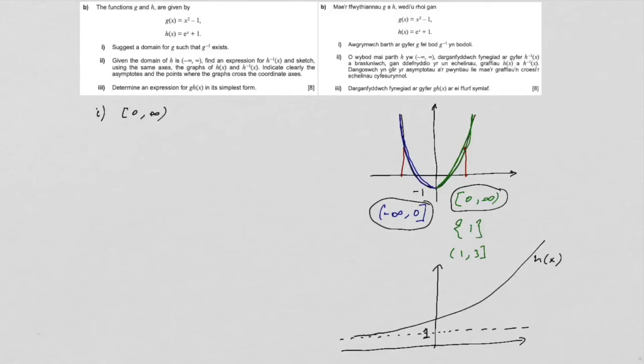And H is, of course, mapping an x value here, so that's our x value onto a y value. Now what H to the minus one does, so that's the path of H of x, but what H to the minus one does is goes from a y value onto an x value. So that's our H to the minus one.